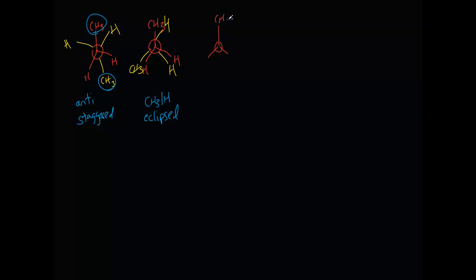I'm going to draw the front carbon again — leave it stationary — and keep turning in the same direction, 60 degrees. It's going to go to a staggered conformation. Look at where the methyl group is — methyl group is up here now. If I turn it counter-clockwise another 60 degrees, the methyl group is over here, so I still have a staggered. Except now, when the methyl groups are 60 degrees apart from each other, that gets another special name: it's called gauche.